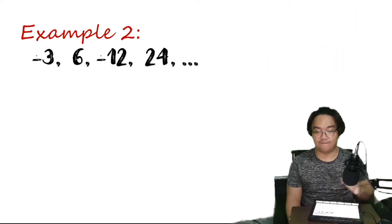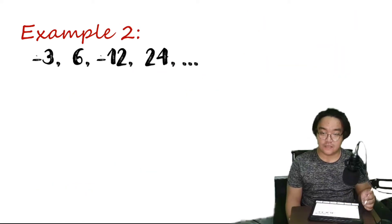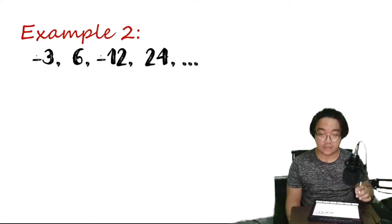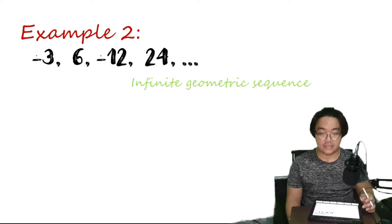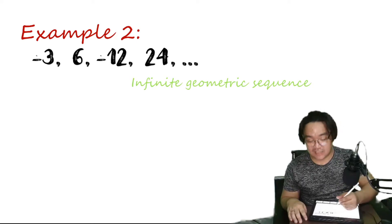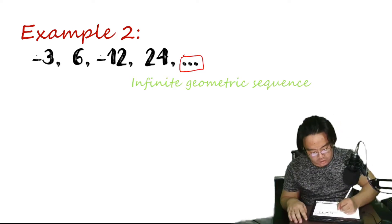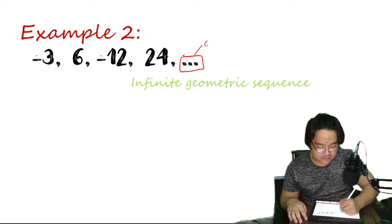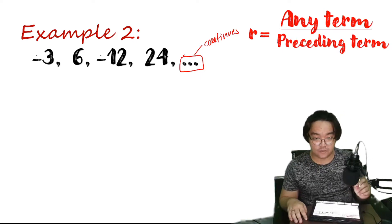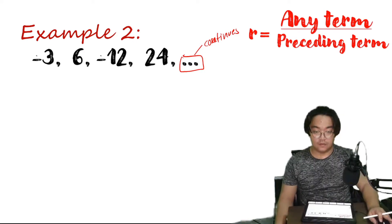Example number 2. Consider the sequence negative 3, 6, negative 12, positive 24, and so on. In this sequence, we call it an infinite geometric sequence. This 3 dots here is called an ellipsis, which means the sequence continues. So to get the common ratio, we just have to divide any term by its preceding term.